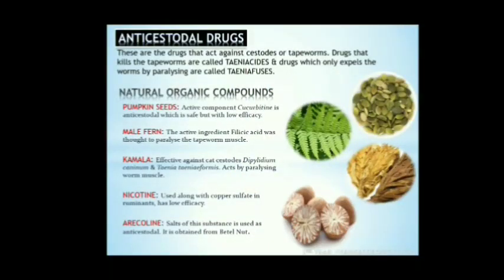Anti-cestodal drugs. These drugs act against cestodes or tapeworms. Drugs that kill tapeworms are called taeniacides; drugs which only expel tapeworms by paralyzing them are called taeniafuges. In earlier times, many natural organic compounds were used as anti-cestodals, such as pumpkin seeds which contain cucurbitin as the active component against cestode worms. It is a very safe drug even for weak and young animals. However, low efficacy led to discontinuation of pumpkin seeds as an anti-cestodal drug.